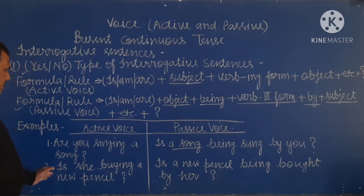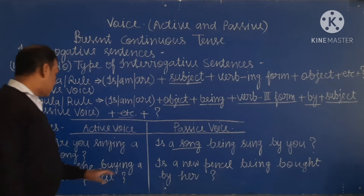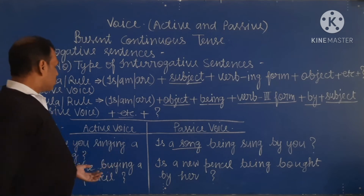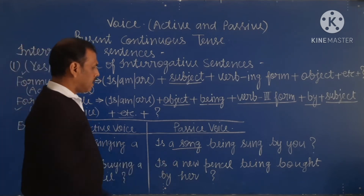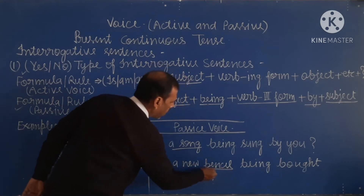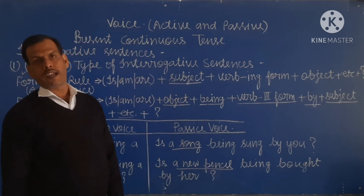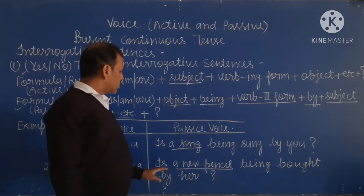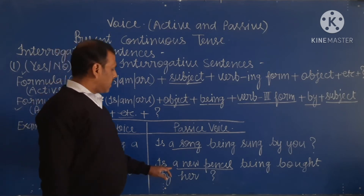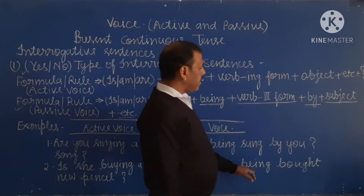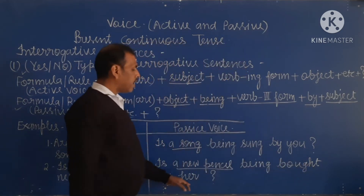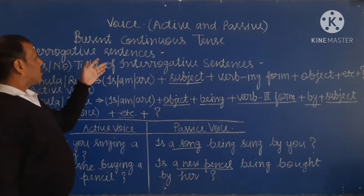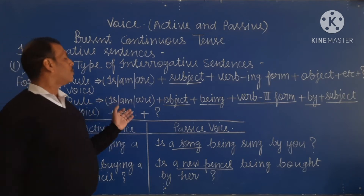The second example is: 'Is she buying a new pencil?' The passive voice of this sentence — here, 'a new pencil' is the object. Since 'a new pencil' is in singular form, we write 'is'. So the passive voice is: 'Is a new pencil being bought by her?' This is the formation and formula of passive voice for yes-no type interrogative sentences.